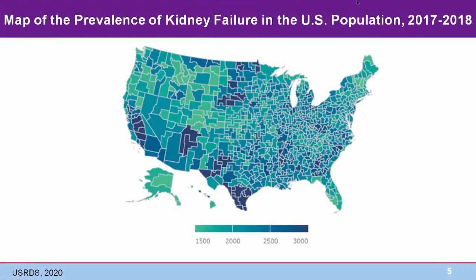This map of the United States shows the density of the population with kidney failure in 2018. The darkest blue color shows areas where over 3,000 people per million are on kidney replacement therapy. Contiguous areas with elevated prevalence include the coastal plains of South Carolina and southern Georgia, the shores of Lake Michigan from Gary to Chicago to Milwaukee, the Mississippi River Valley from roughly St. Louis to Memphis, southern Texas, the Western Dakotas, and the Central Valley of California. The lightest greeny-blue areas represent less than 1,500 people per million on KRT. There has been a greater than four-fold increase in patients on KRT since the mid-1980s.